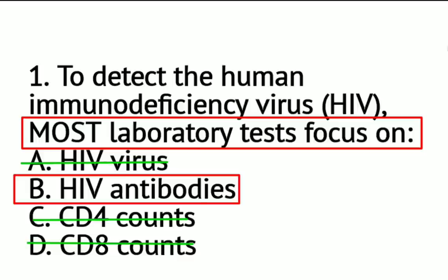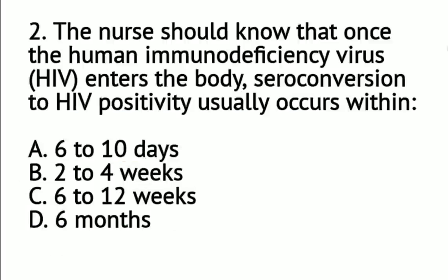ELISA does not detect the virus itself, but rather the HIV antibodies. The CD4 cell count is associated with the incidence of acquired immunodeficiency syndrome or AIDS — it is used to categorize HIV to AIDS. Your CD4 cell count is useful for AIDS categorization. CD8 counts are not performed to detect HIV. So EIA or ELISA detects your HIV antibodies and not the HIV virus itself. The correct answer is letter B.